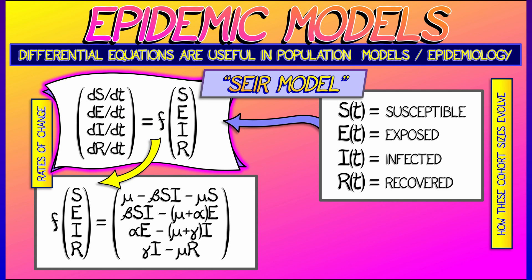Now, this function looks kind of complicated, but that's because it involves various positive constants: alpha, beta, gamma, and mu. These are rates, say rates of infection, rates of recovery, things like that.